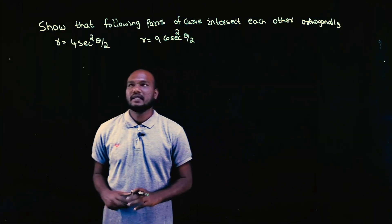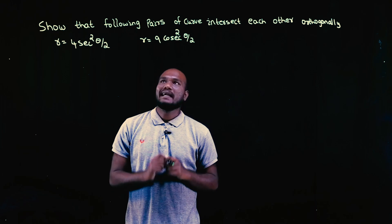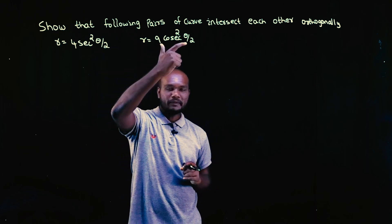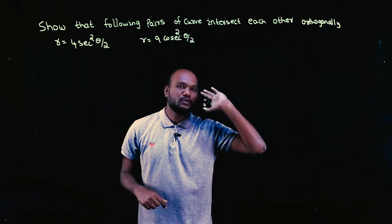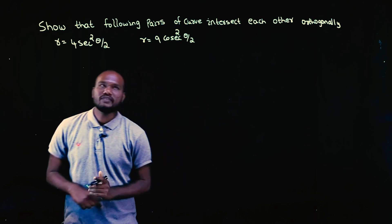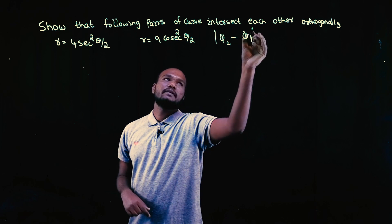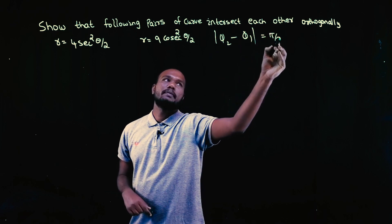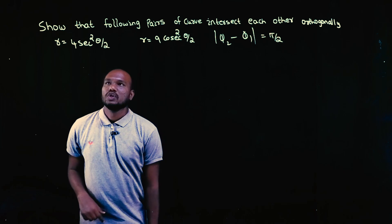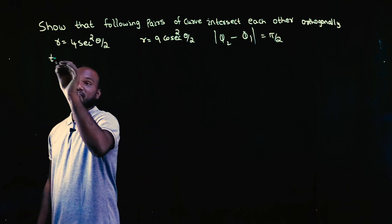Hey guys, welcome to another video in this series. We are solving 21 Scheme M1 questions from the first module on polar curves. Make sure to subscribe for more videos. In this question, there are two curves and we have to find that the angle between these two curves is π/2, meaning they are intersecting orthogonally. They are asking for φ₂ minus φ₁ equal to π/2, so first we have to find φ₁.